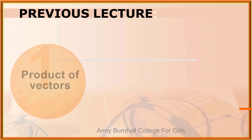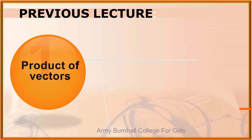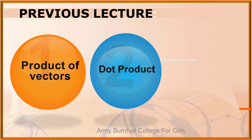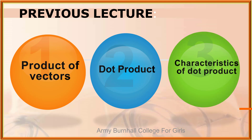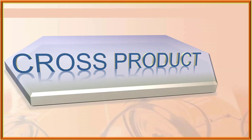In the previous lecture, we discussed the product of vectors — how we multiply two vectors. We covered the dot product: how two vectors are multiplied to get a scalar quantity, along with some characteristics of the scalar product. In this lecture, we will discuss the other way of multiplying two vectors, which is the cross product.